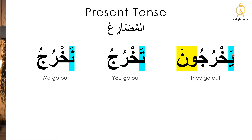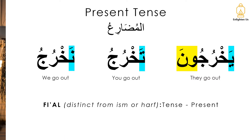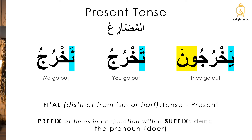And then we have additional letters. We've got the يَ here and the وَا ونُون، the تَ and then again the نُون. So there are varying prefixes and suffixes. And that's because this is a فعل — this is a verb — and it's distinct from an اسم or a حرف because it exists in a particular tense. In this case, we're looking at the present tense.